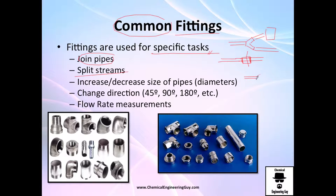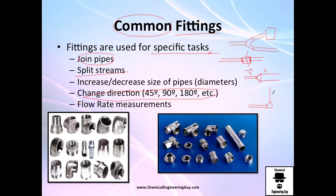Operating at a smaller flow diameter implies very high velocity, so if you want to lower the velocity you just use an expansion fitting and you decrease the velocity. You may also want to change direction — for example, if you need to pump something upward, you need to change the direction of flow. Finally, there are also flow rate measurement devices used to calculate pressure drop, and from that you calculate flow speed and volumetric flow rate. Here I have plenty of fittings — this is an expander, this is a splitter.